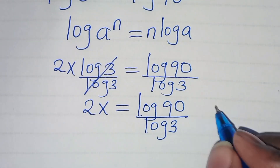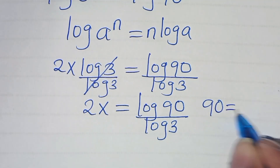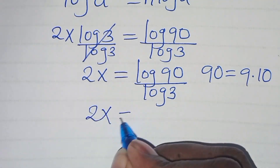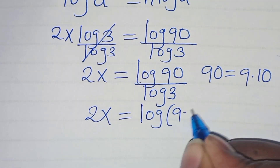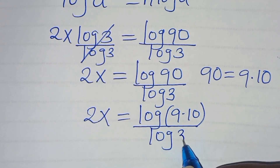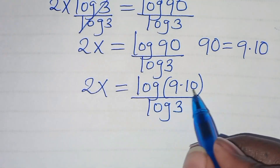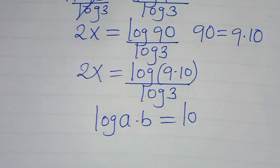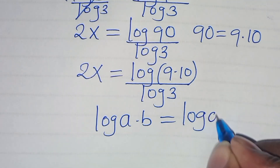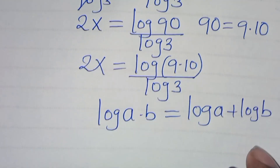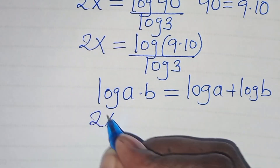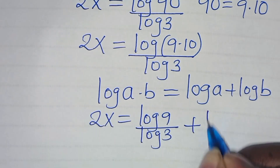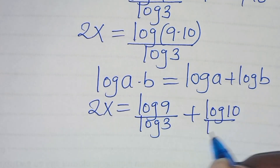The next step: we can express 90 as 9 times 10. So this implies here we have 2x is equal to log of 9 times 10, divided by log 3. We have that log(9 times 10) is in the form of log(a times b), which we can express as log a plus log b. Applying this logarithm property, we have 2x equal to log 9 over log 3, plus log 10 over log 3.